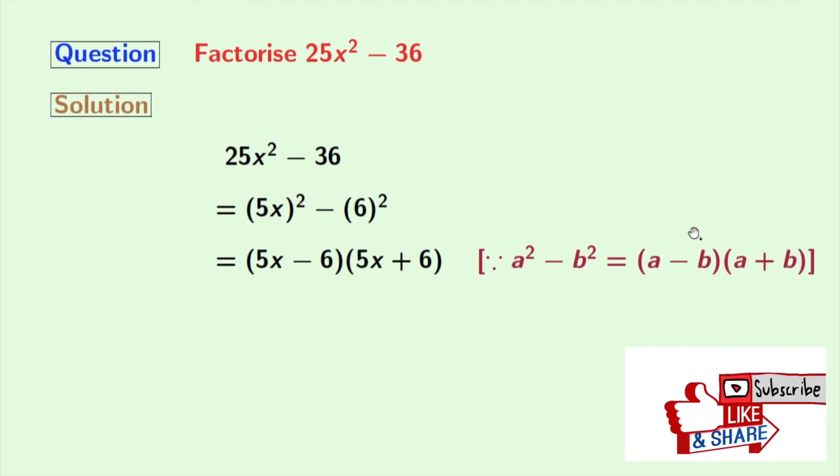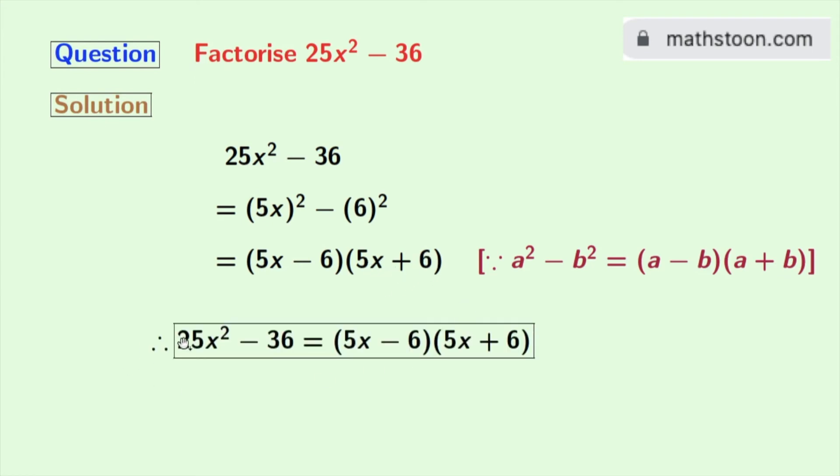Applying that formula, we will get this equal to (5x - 6) times (5x + 6). So finally we get 25x² - 36 is equal to (5x - 6)(5x + 6), and this is our desired factorization of this expression.